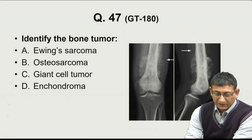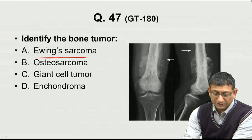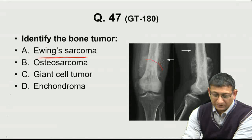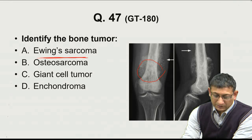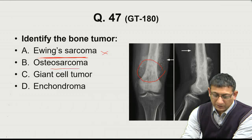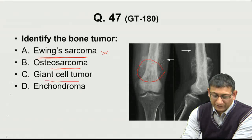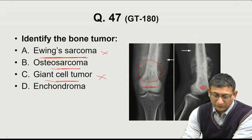Ewing sarcoma involves the diaphyseal portion of the bone in young adults, whereas this tumor seems to be involving the metaphyseal area, so that is not going to be the answer. Osteosarcoma involves the metaphyseal area, which matches. Giant cell tumor involves the epiphyseal area, which is not involved here, so giant cell tumor is also out.